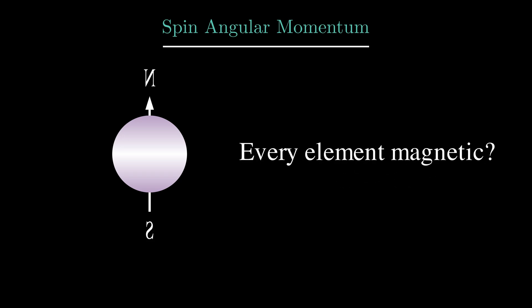Wait, you might ask here, so if all the electrons are tiny magnets, won't that make every element magnetic? Now here is where things get a bit more complicated.